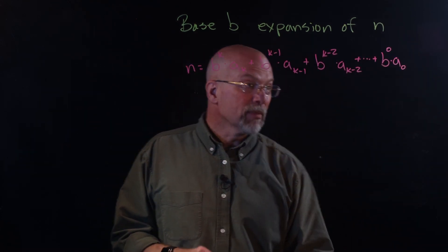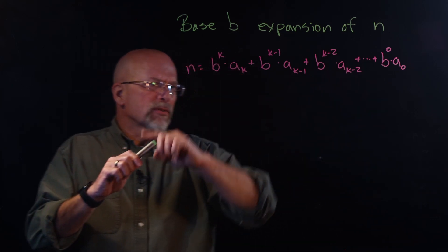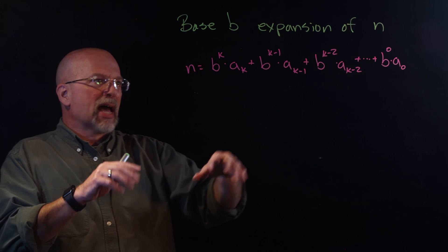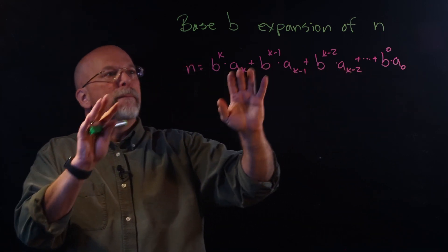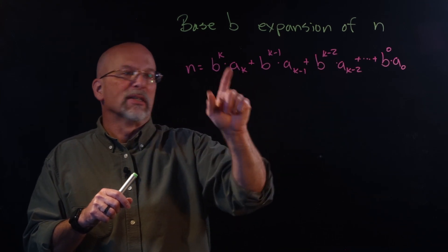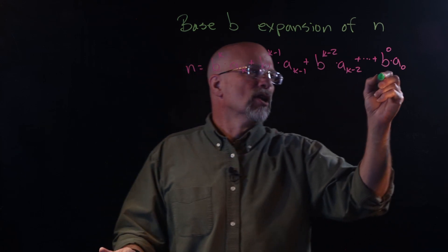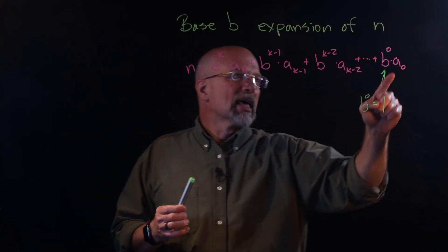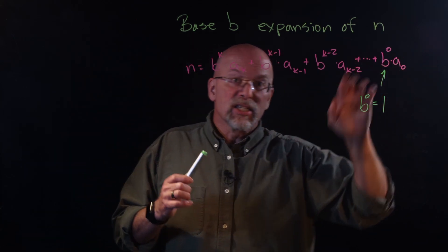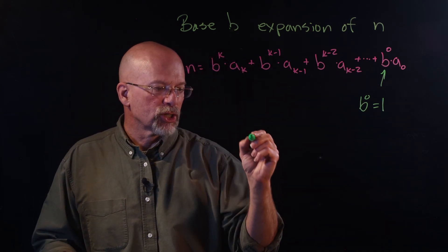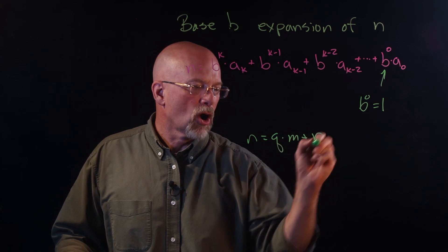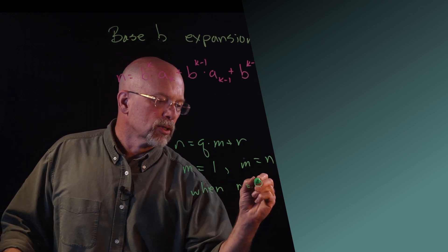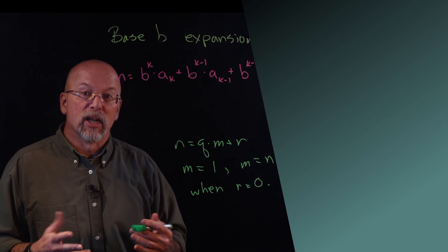Going back to our expression n equals q times m plus r, we see that m could equal 1, or m could equal n when r equals zero. That is where we will begin our discussion about prime numbers.